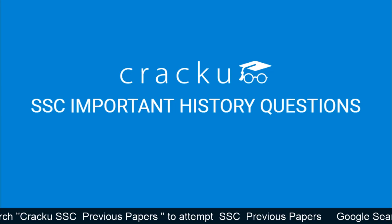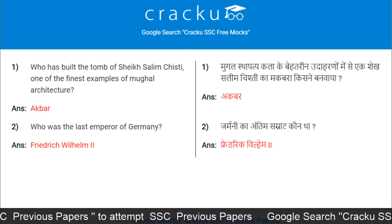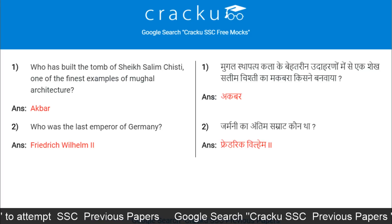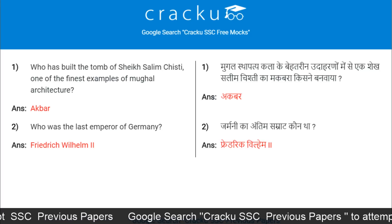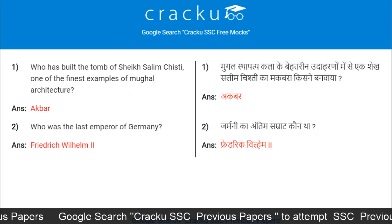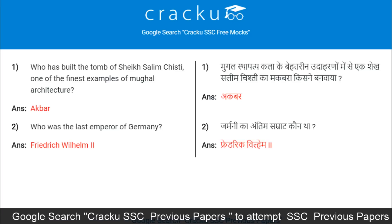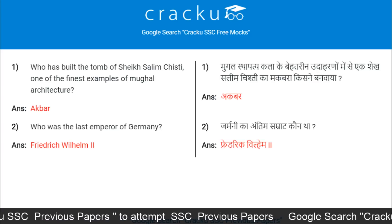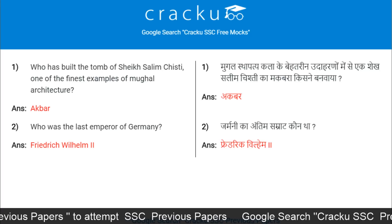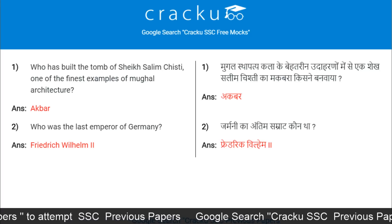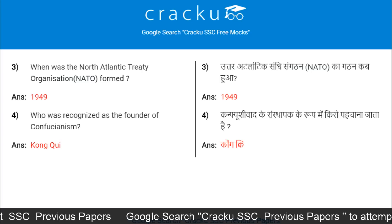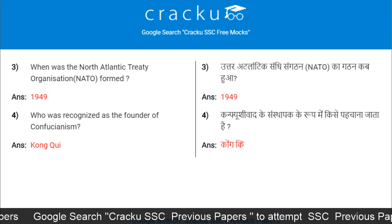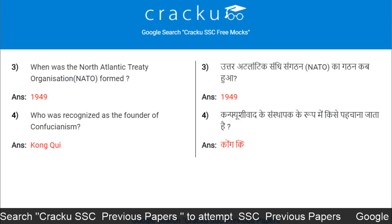Today's first question: Who built the tomb of Sheikh Salim Chisti, one of the finest examples of Mughal architecture? Akbar. Who was the last emperor of Germany? Frederick Wilhelm II. When was NATO, the North Atlantic Treaty Organization, formed? 1949.